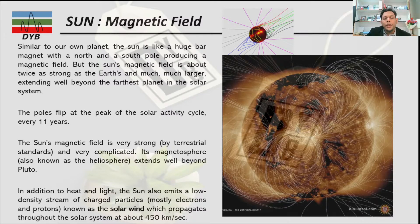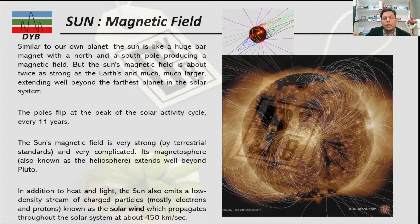In addition to heat and light, the Sun also emits a low-density stream of charged particles. These particles are mostly electrons and protons, which are known as solar wind. When the solar wind blows, it contains electrons and protons that propagate throughout the solar system and can affect any planet in it. The speed of this solar wind is approximately 450 kilometers per second.